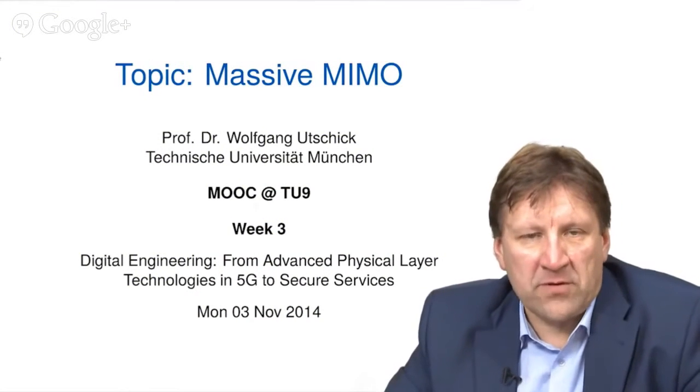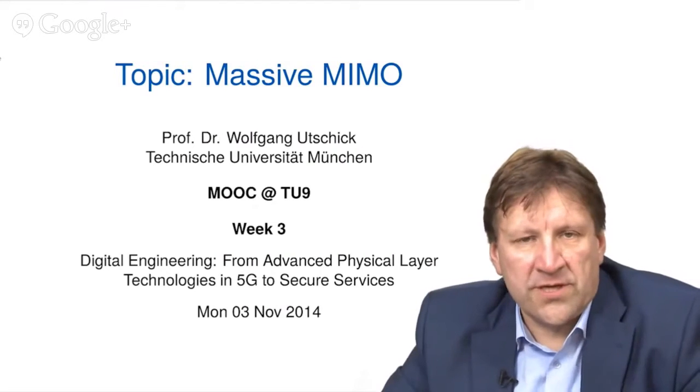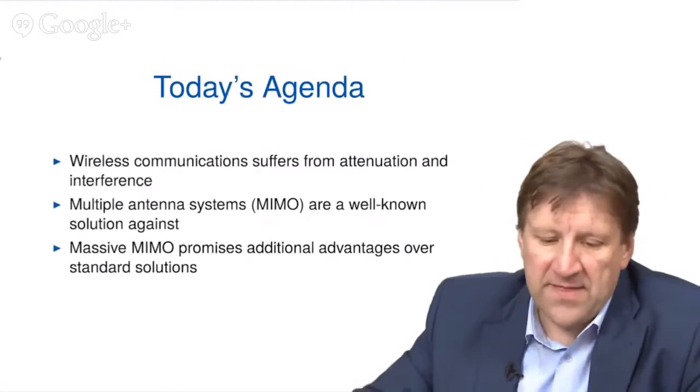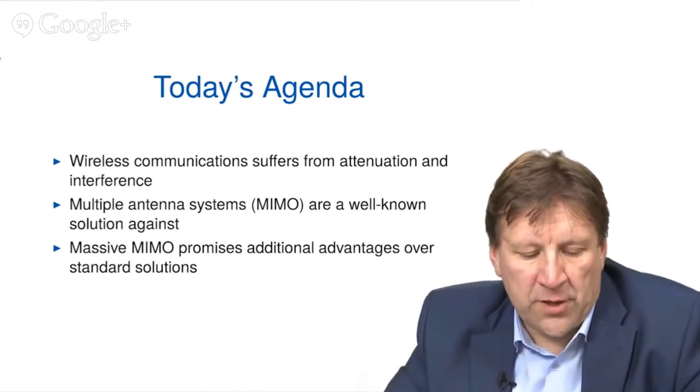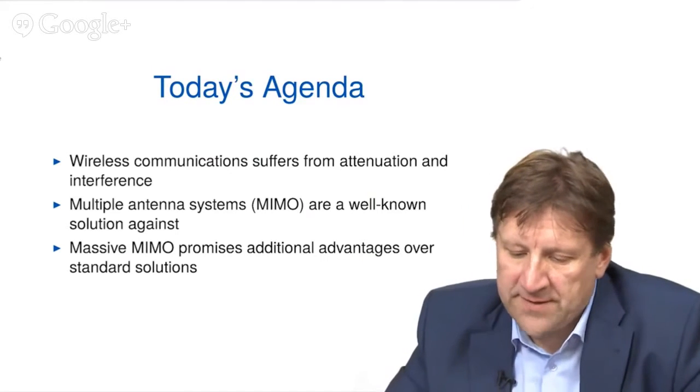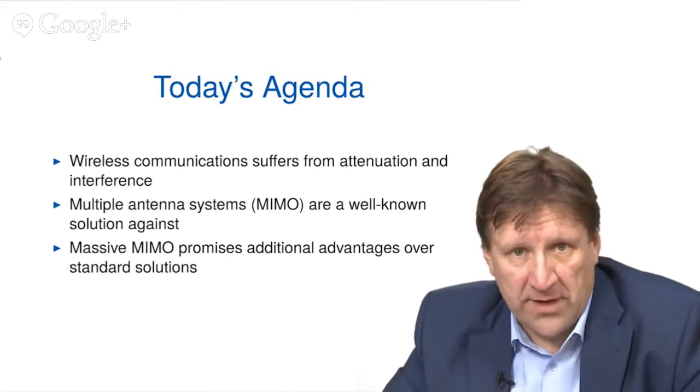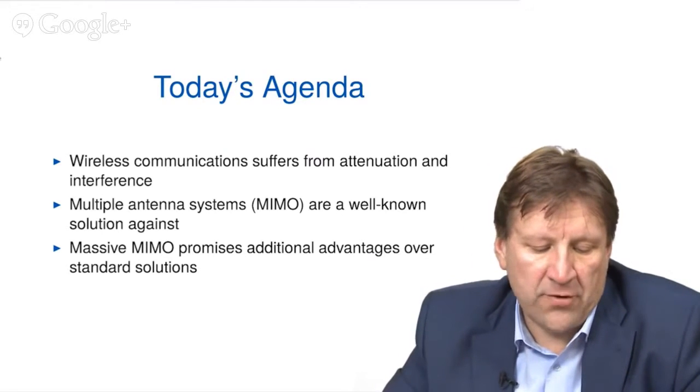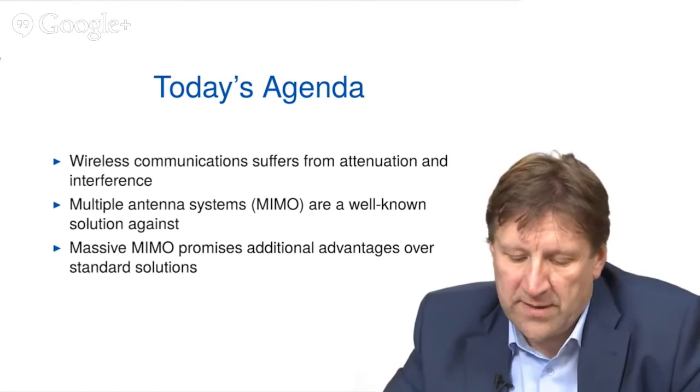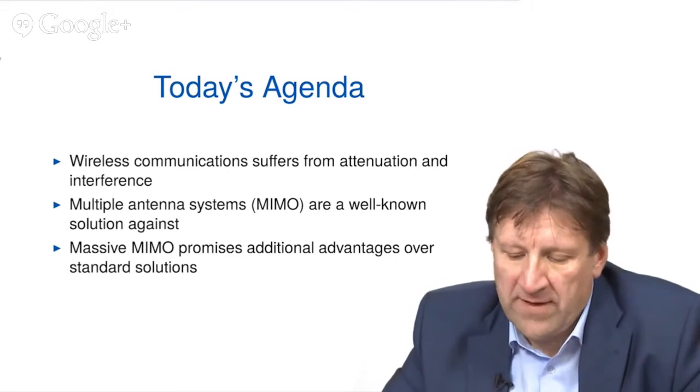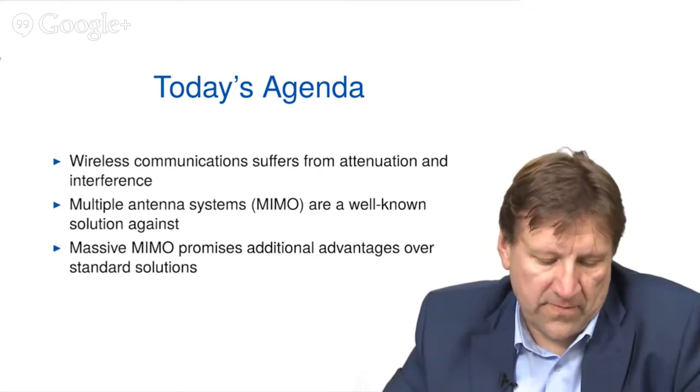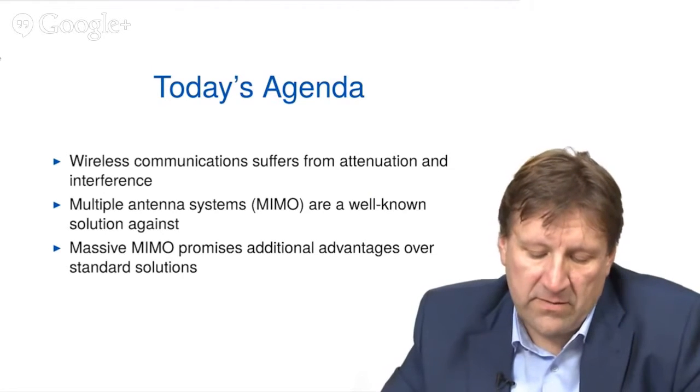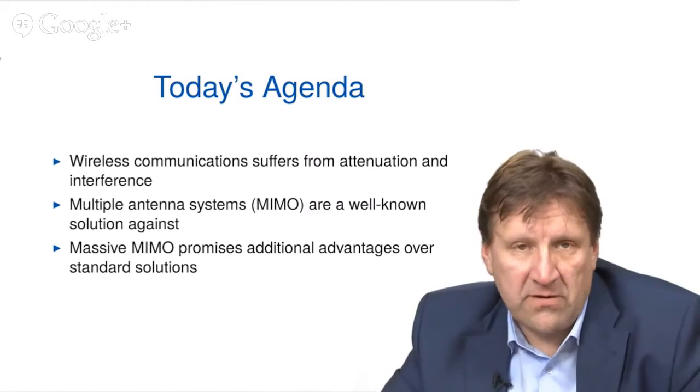This session is about Massive MIMO, which is one of the most promising solutions for the fifth generation of mobile communication networks. And this is our today's agenda. I will first talk about the wireless communication link, which suffers mainly from the attenuation of the signal strengths and the interference between users. Then I talk about multiple antennas systems, referred to as MIMO, which are a well-known solution against these problems. And then you will learn about Massive MIMO, which is a promising candidate and has additional advantages over standard solutions.